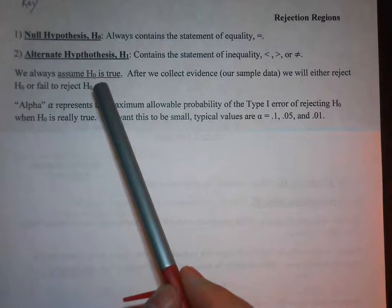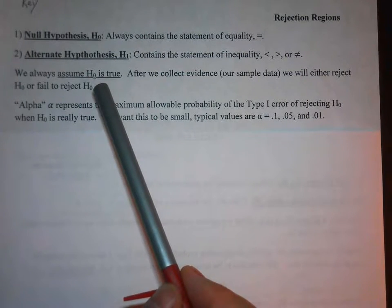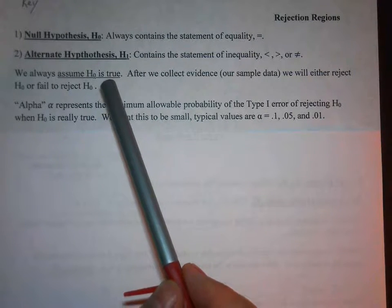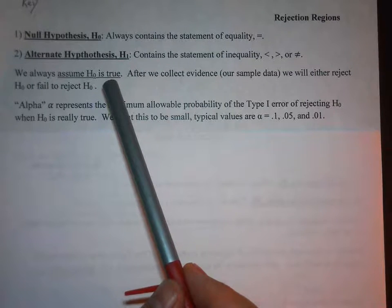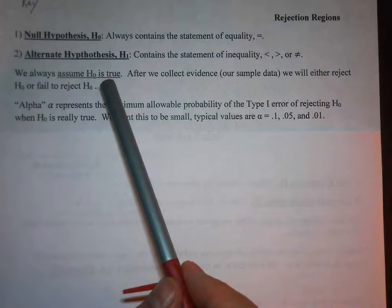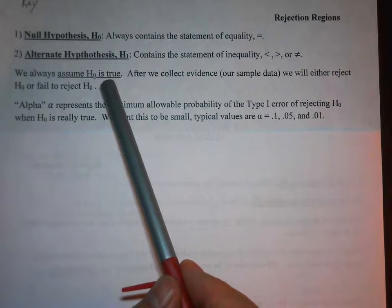It's essential to understand that in a hypothesis test, you always assume the null hypothesis is true. So if we were to say that mu equals 20, we're going to assume that mu equals 20 is true.